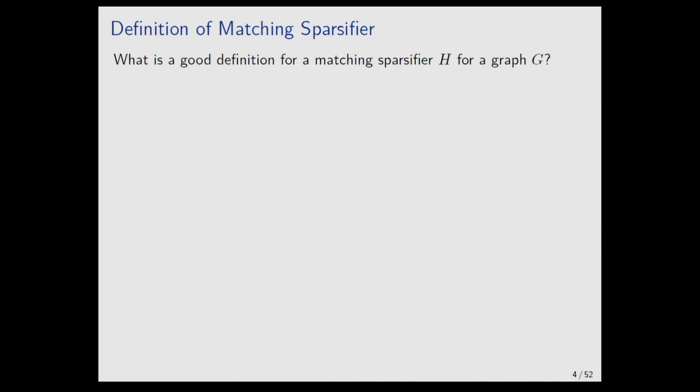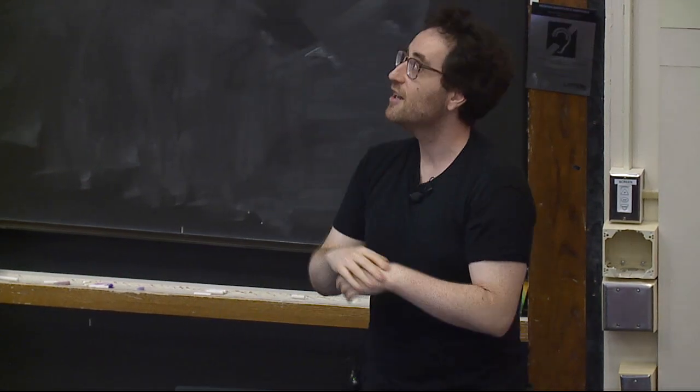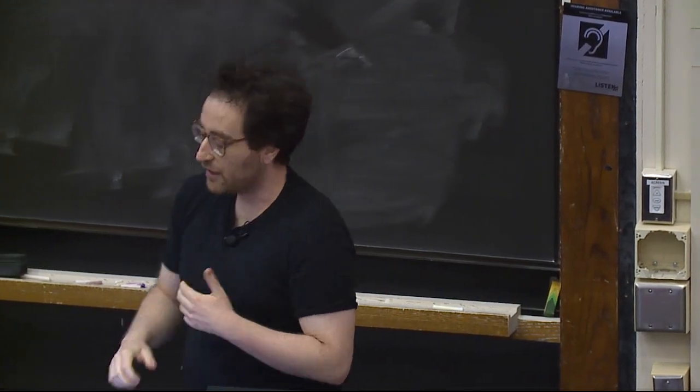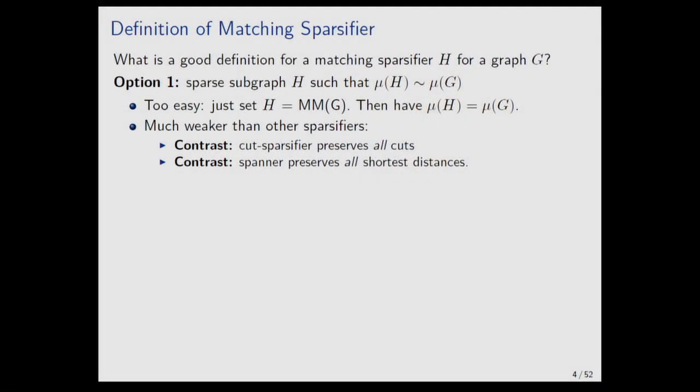What would be a good definition of a sparsifier for matching? Here's one option: just a sparse subgraph with approximately the same matching size as G. This is a dumb definition — can someone tell me why? The maximum matching itself is a sparse graph with exactly n edges and the exact same maximum matching size. So this is not a very interesting sparsifier, and it doesn't really help very much. It's too easy and not very useful.